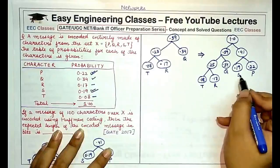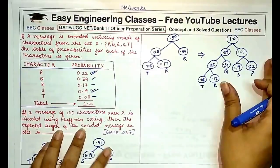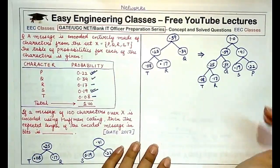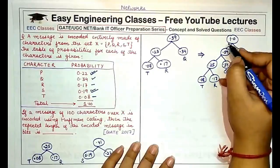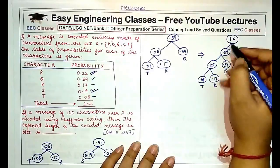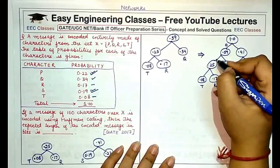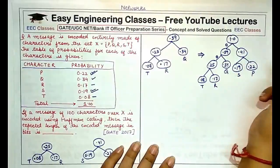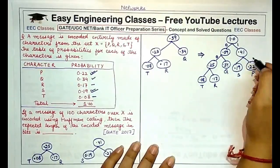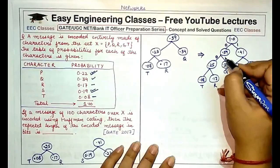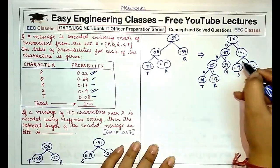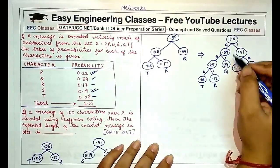Now the next step is to assign the codes. How you assign the codes: all the left children are assigned a code of 0 and all the right children are assigned a code of 1. So 0, 1, 0, 1, 0, 1, and 0, 1.